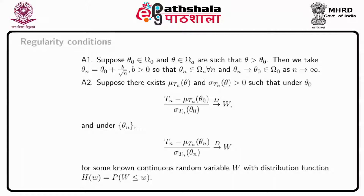Under theta naught, T_n minus mu(theta naught) under T_n divided by sigma(theta naught) under T_n goes to the distribution of W. And under theta_n, T_n minus mu(theta_n) of T_n divided by sigma(theta_n) of T_n also converges to the same distribution of W, where W has some known continuous distribution with distribution function H(W) equal to probability that W less than or equal to small w.